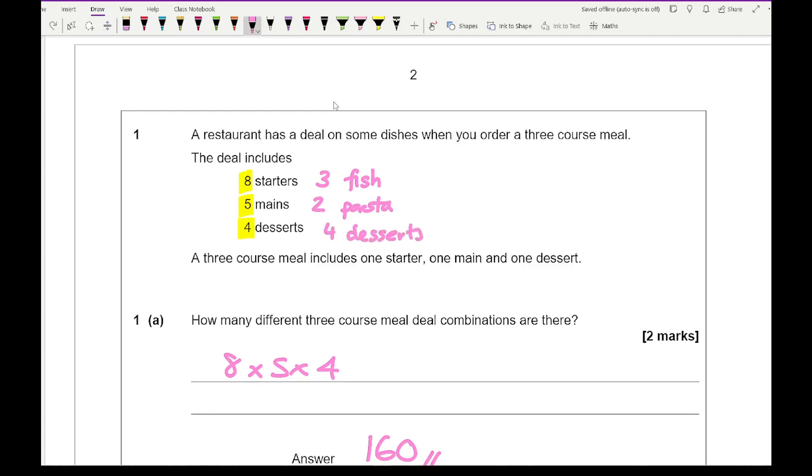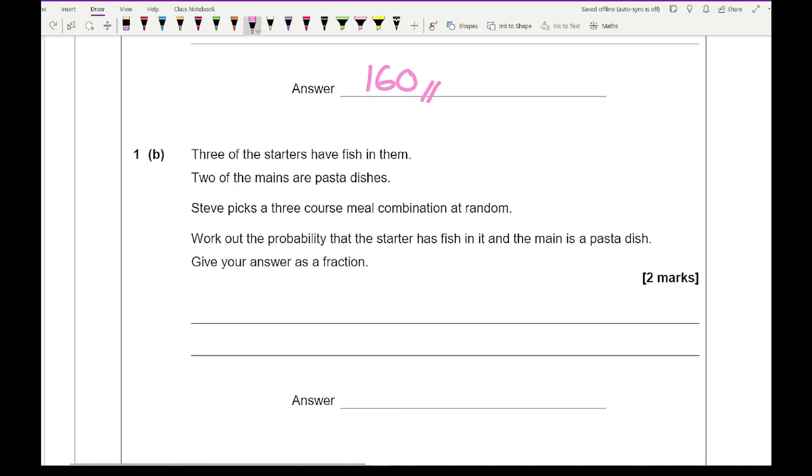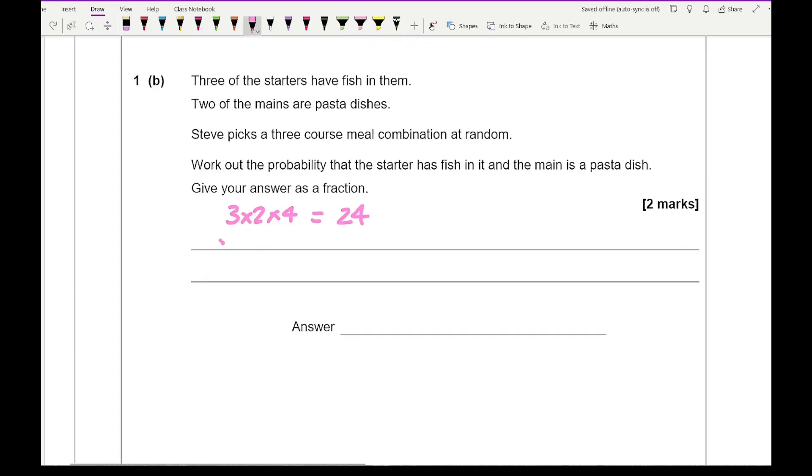In terms of picking out our first value, that's going to be 3 times 2 times 4, which gives me an answer of 24. Out of the total possible combinations, that's going to be 8 times 5 times 4, which is 160. So then simplifying 24 over 160 as a fraction, we get an answer of 3 over 20.